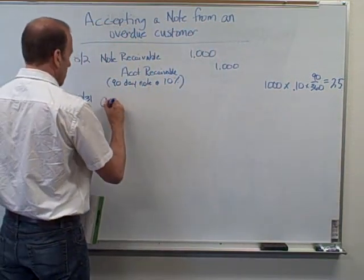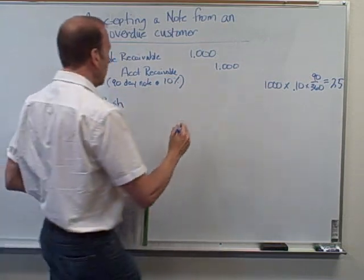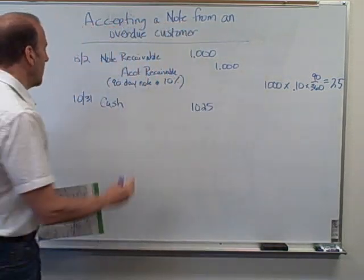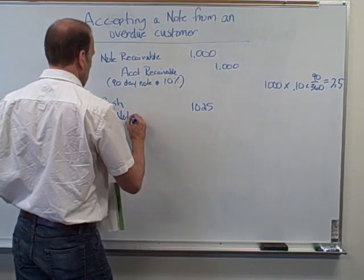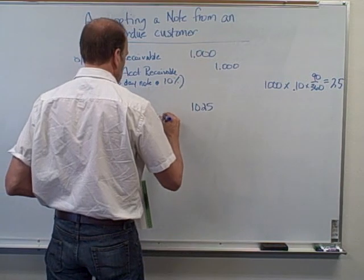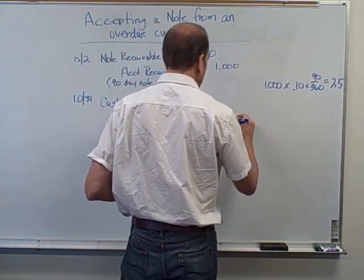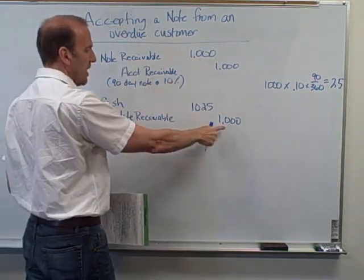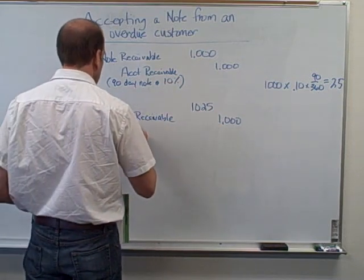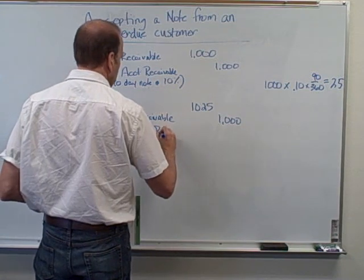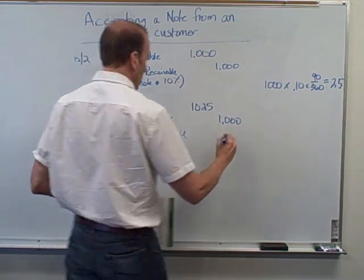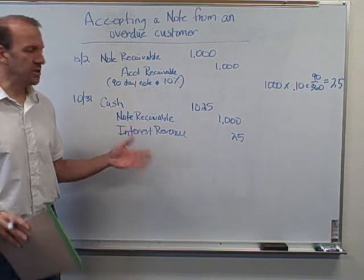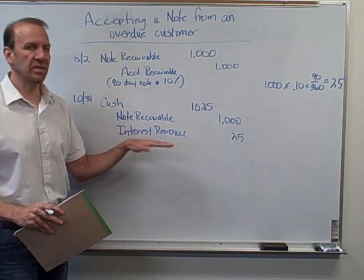On October 31st we will receive one thousand and twenty-five dollars, so that's our debit. Our credit is to note receivable for one thousand dollars to eliminate it — they no longer owe us any money — and then we have interest revenue of twenty-five dollars. This is called honoring the note; textbook terminology is that they honored the note, meaning they paid it off.